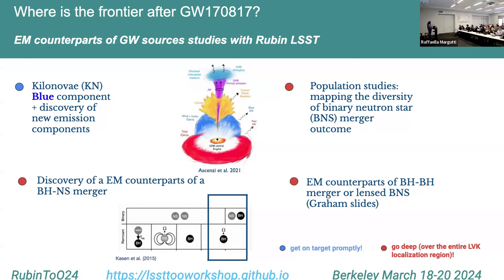Rubin is the perfect machine for this because it can tile the sky map. We are expecting a reduced sky map in O4 and O5 because we will have not only LIGO and Virgo, but also KAGRA and then LIGO India. By getting on target promptly and going deep with Rubin, we may succeed in discovering new emission components — for example, the blue component of kilonova. We can do population studies and map the diversity of binary neutron star merger outcomes. We might also discover electromagnetic counterparts from black hole–black hole or neutron star–black hole mergers.